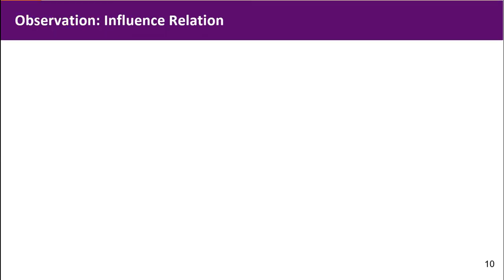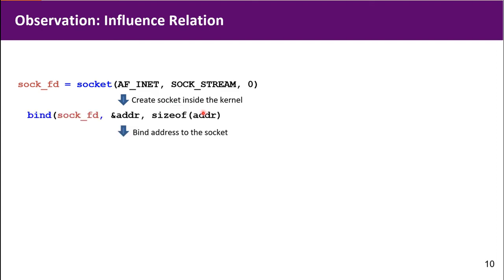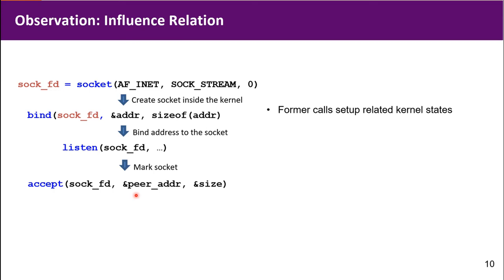Let's now focus on high-quality inputs and see why its quality is high. The socket syscall first creates some socket-related kernel state inside the kernel. Then we use bind to bind the address to that socket. Also, we mark that the socket is connectable through the listen syscall.